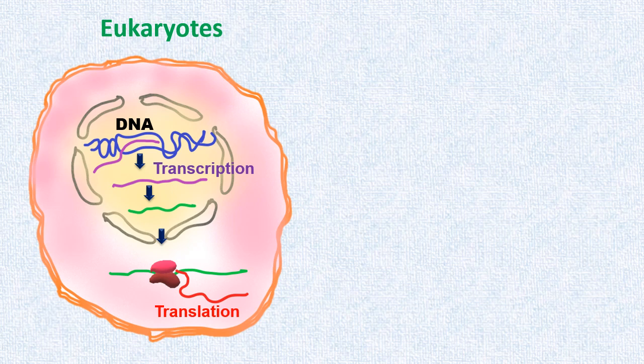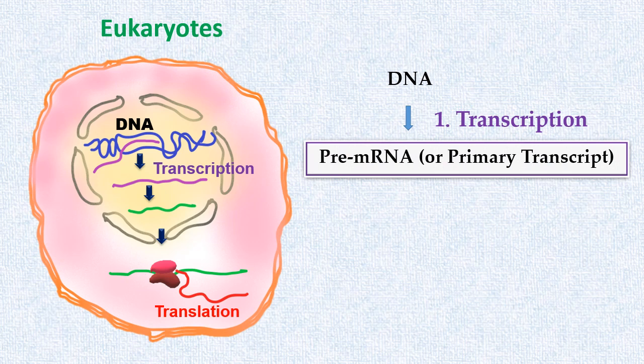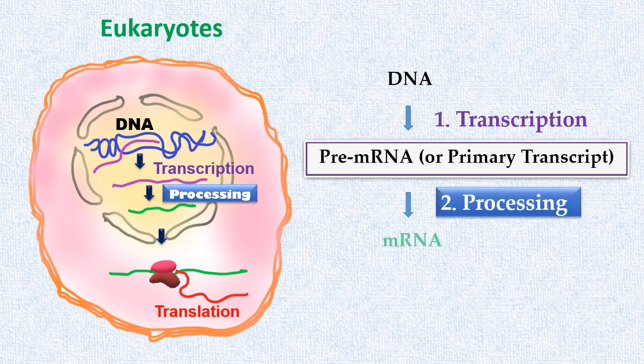Another major difference is that in eukaryotes, the RNA synthesized as a result of transcription is not actual mRNA. The single strand of RNA synthesized in the process of transcription is known as primary transcript or pre-mRNA. This pre-mRNA undergoes processing before translation to form mature mRNA.